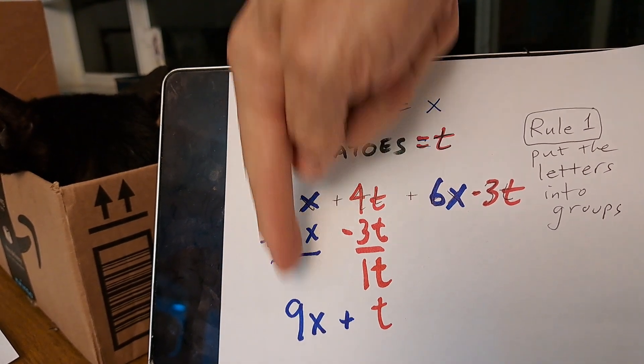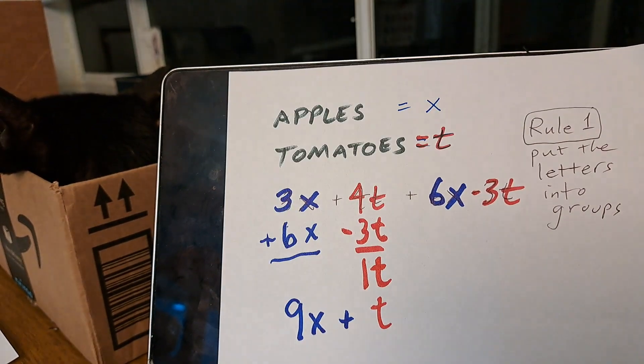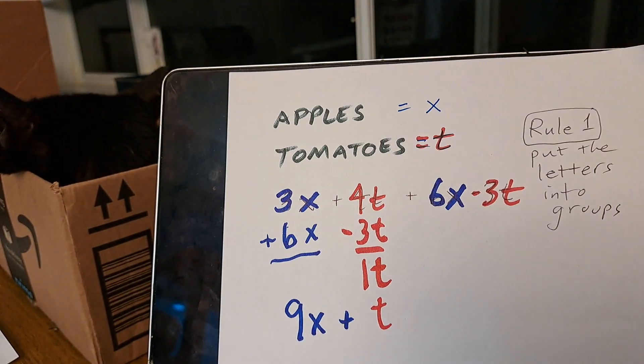And so on this side it's easy. 9 plus 6 gives me, sorry, 3 plus 6 gives me 9.